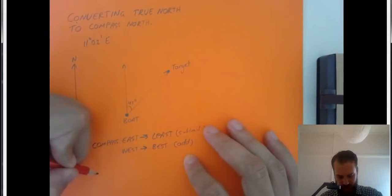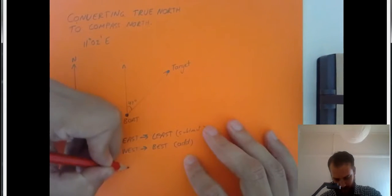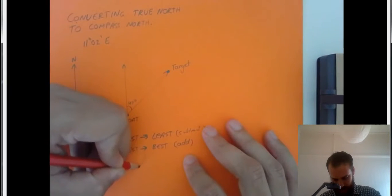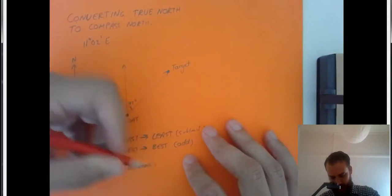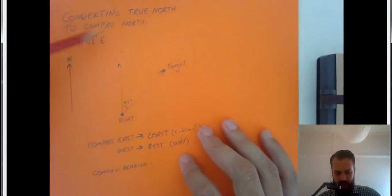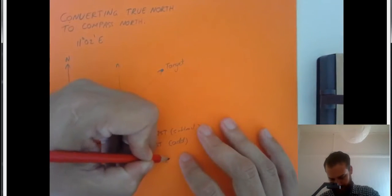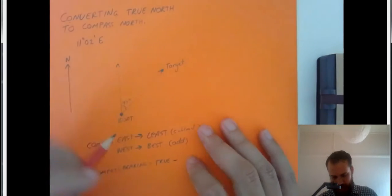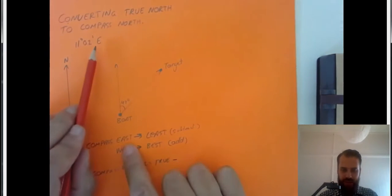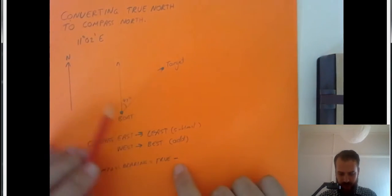For this particular question, our compass bearing is going to be equal to the True North bearing, which is 47, minus, because we have a variation that's east, minus 11 degrees and 2 minutes.